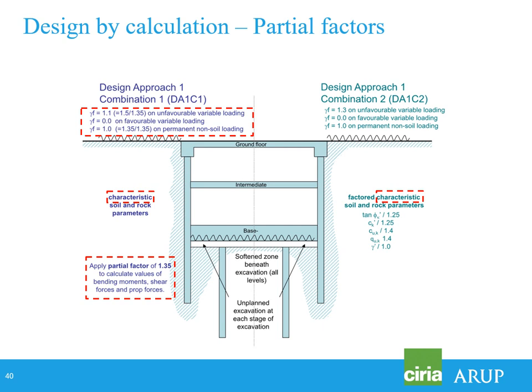There's a little trick to avoid double-counting. If you've got a surcharge on the back of the wall which is a live variable load, instead of applying a factor of 1.5 to that variable load, you apply a factor of 1.11. That's because if you apply 1.5 and then multiply the effect of the action you're double-counting. The 1.11 is essentially 1.5 divided by 1.35 — a small change to make sure you don't double-count partial factors on surcharges.